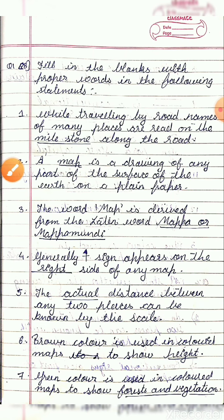Statement 7: Green color is used in a colored map to show blank. The answer is forest and vegetation.